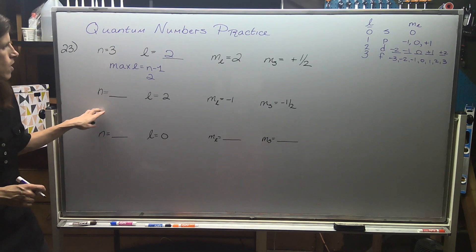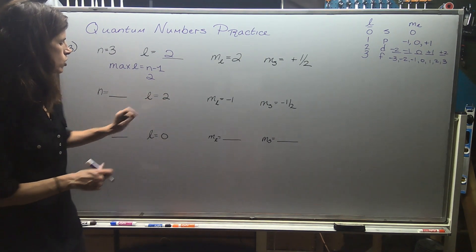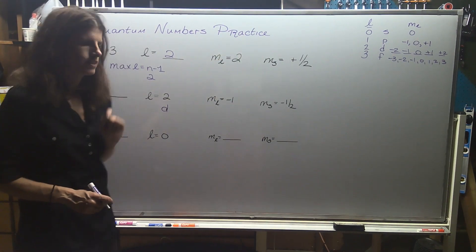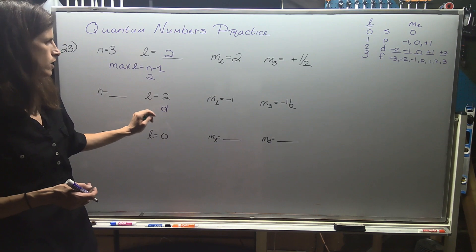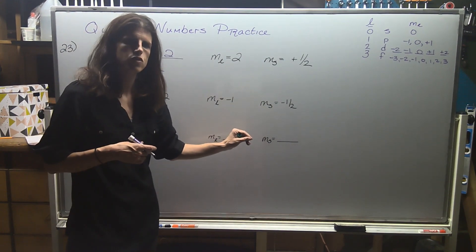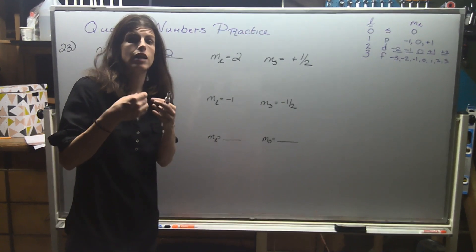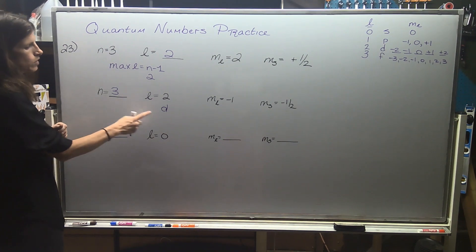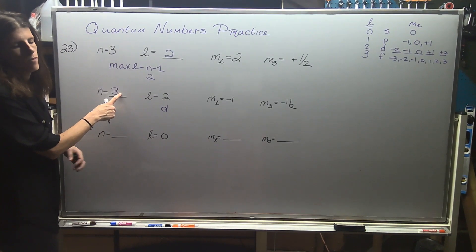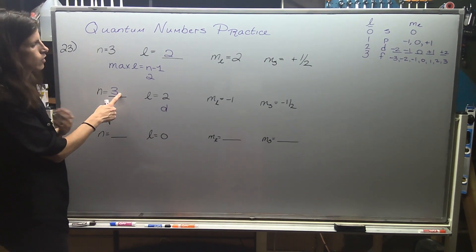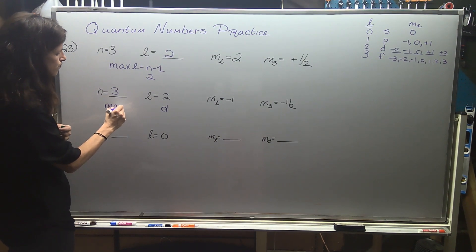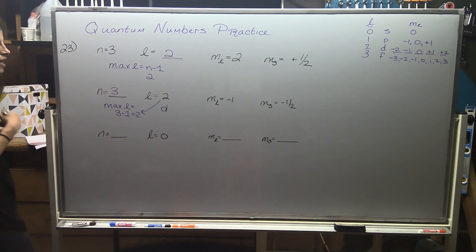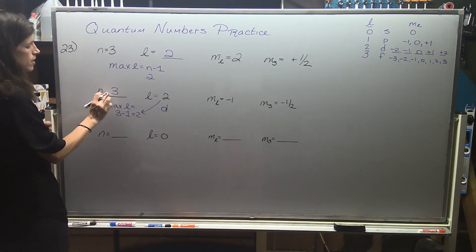We're missing the principal quantum number and we have l equals 2 — a d orbital — with ml equals negative 1, which is perfectly acceptable under a d subshell. The spin has only two options: plus one half or minus one half, down to the level of the individual electron. I want to use at least n equals 3 here because we don't see d orbitals until the third row, or we can say max l requires n minus 1 equals 2, and they already gave us 2.